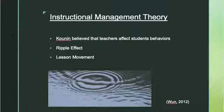Kounin also developed theories about classroom management based around a teacher's ability to organize and plan in their classrooms while using proactive behavior. He believed that in order for a teacher to have an effective connection between management and teaching, there needed to be good lesson movement. This lesson movement is achieved through with-it-ness, overlapping, momentum, smoothness, and group focus.